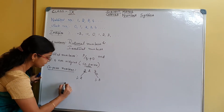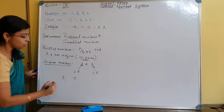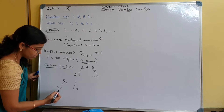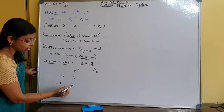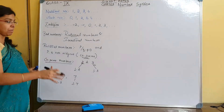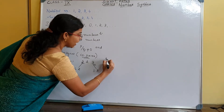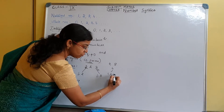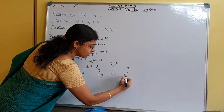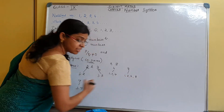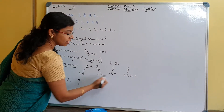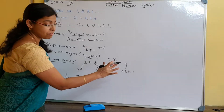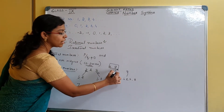Another example: 3 and 7. Factors of 3 are 1 and 3; factors of 7 are 1 and 7. Other than 1, they do not have any other common factor, so 3 and 7 are also co-prime numbers. What about 4 and 8? Factors of 4 are 1, 2, and 4; factors of 8 are 1, 2, 4, and 8. The common factors include both 1 and 2. Therefore, other than 1 they have the common factor 2, so we cannot call 4 and 8 co-prime.